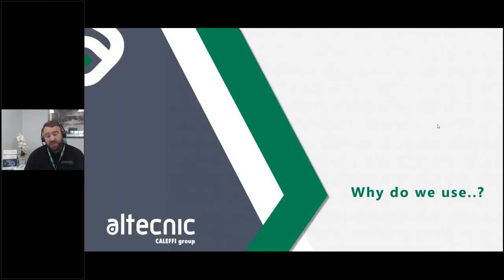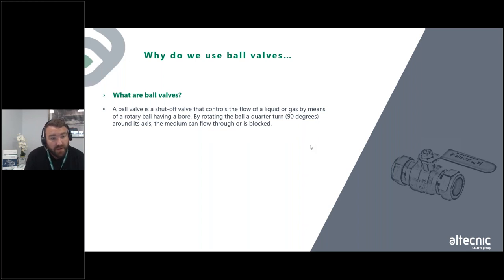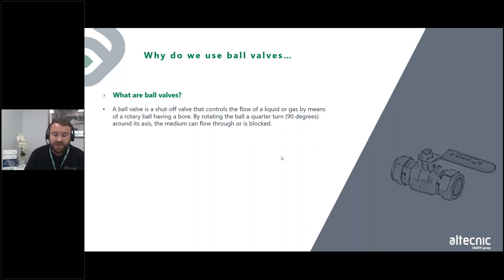The first thing to address is: why do we use ball valves and what's their intended use? A ball valve is a shut-off valve that controls the flow of a liquid or a gas by means of a rotary ball. By rotating the ball a quarter turn, or 90 degrees, around its axis, the medium can flow through or can be blocked — so we use it as isolation. That's their intended use.